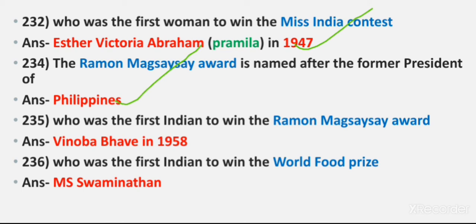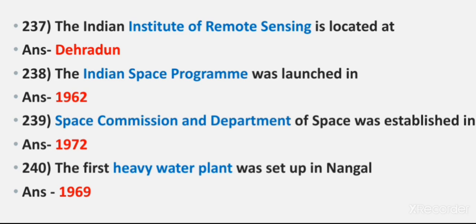Question 235: Who was the first Indian to win the Ramon Magsaysay Award? Answer: Vinoba Bhave, in 1958. Question 236: Who was the first Indian to win the World Food Prize? Answer: M.S. Swaminathan. Question 237: The Indian Institute of Remote Sensing is located at. Answer: Dehradun. Question 238: The Indian Space Program was launched in. Answer: 1962. Question 239: Space Commission and Department of Space was established in 1972.